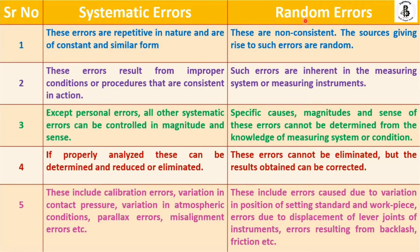But in case of random errors, these errors are non-consistent. Sometimes they will be in the positive manner, sometimes in the negative manner, and sometimes they may even be zero. So random errors have non-consistency, and the sources giving rise to such errors are known as random errors.